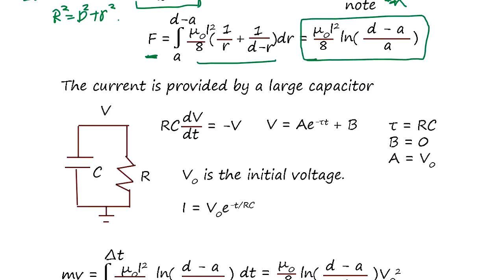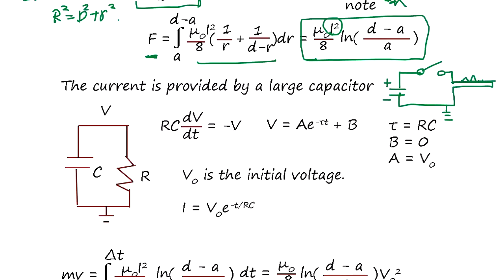To supply the tremendous current I squared required, the circuit uses a large capacitor to store charge. A switch is placed on the railgun circuit, and a very small resistance — using high-quality thick copper — is used. Minimizing resistance is critical because large currents through even small resistance generate substantial heat.